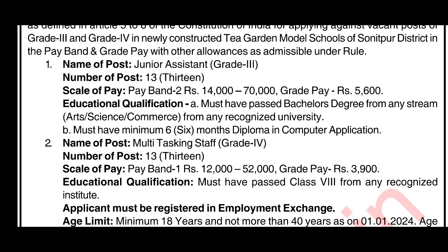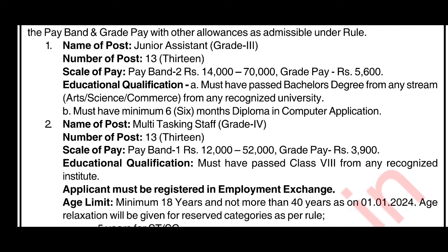For the Grade 4 Multi-tasking Staff post, the salary scale is 12,000 to 52,000, with a grade pay of 3,900. The expected salary is around 22,000 to 33,000. The educational qualification is HSLC pass from a recognized institute.